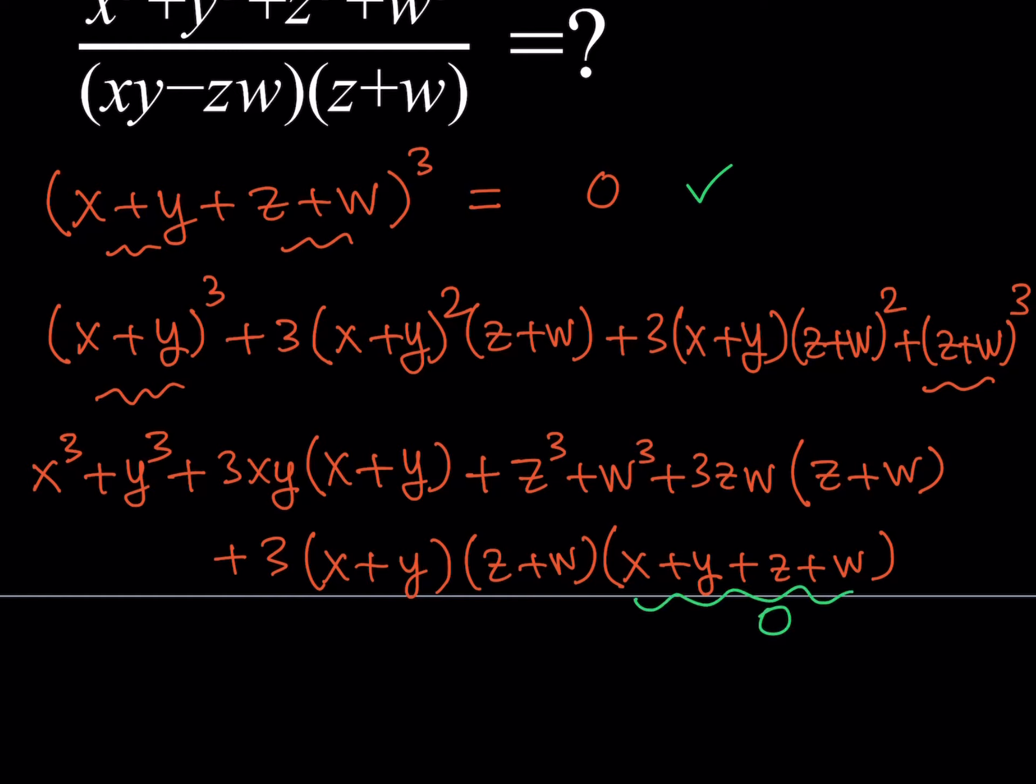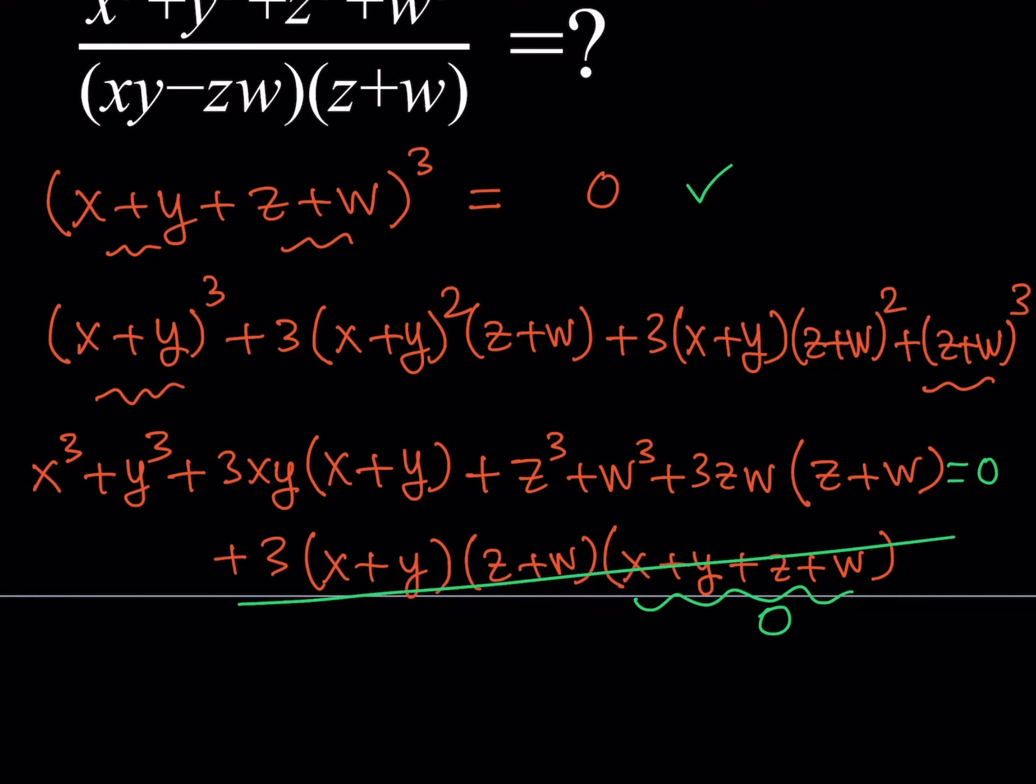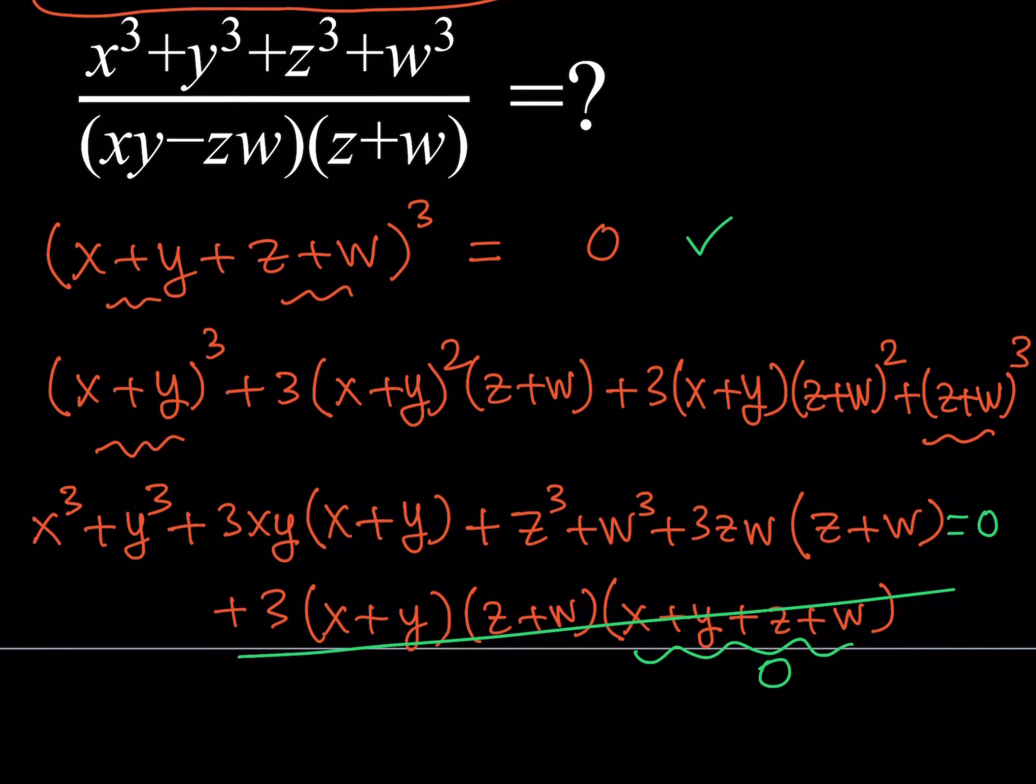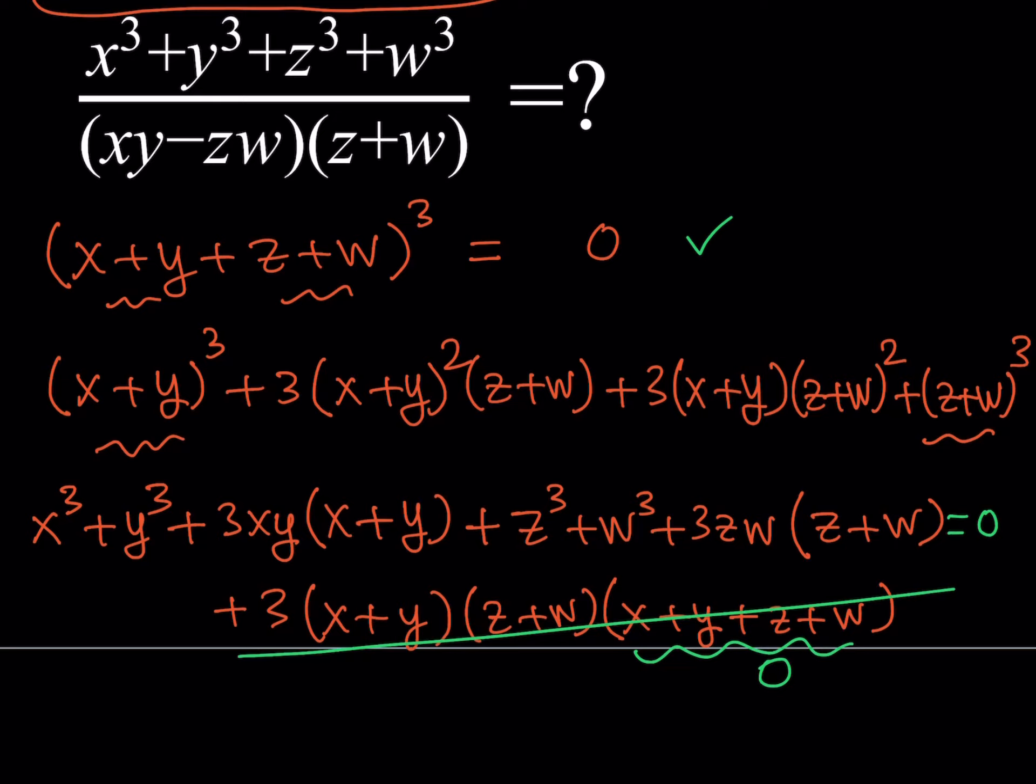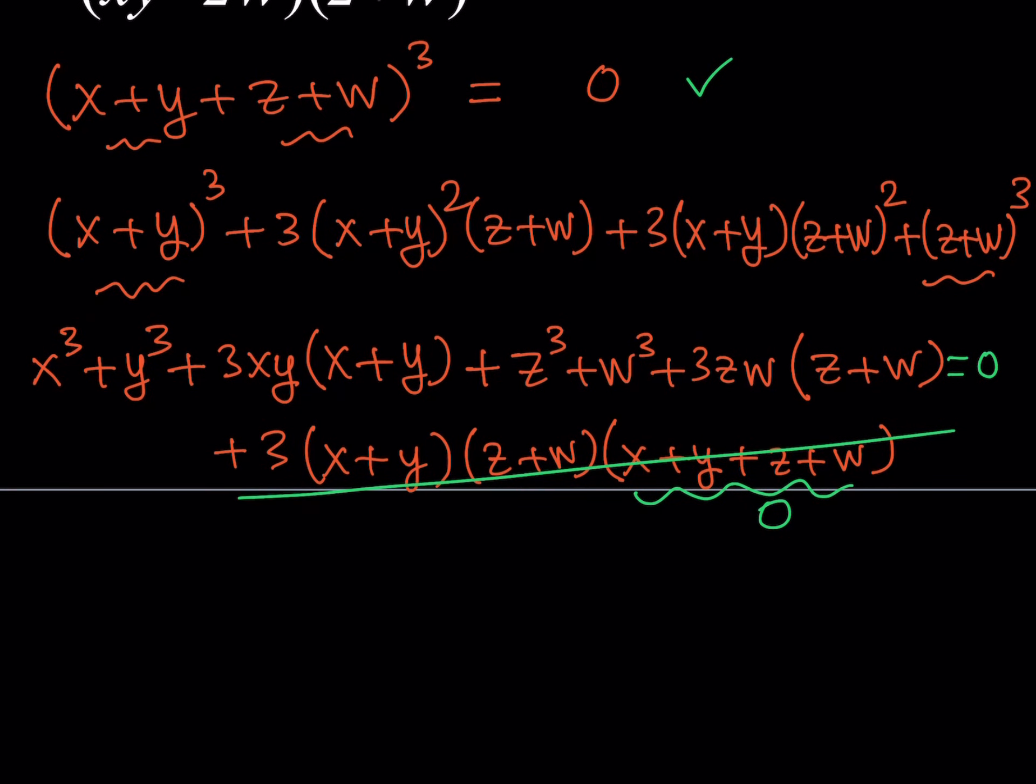This whole thing disappears, and we know that this is equal to zero. But how is that going to help us evaluate our original expression? Notice that certain things are popping up here. I already got the x cubed, y cubed, z cubed, w cubed. So it makes sense if you put those all together.